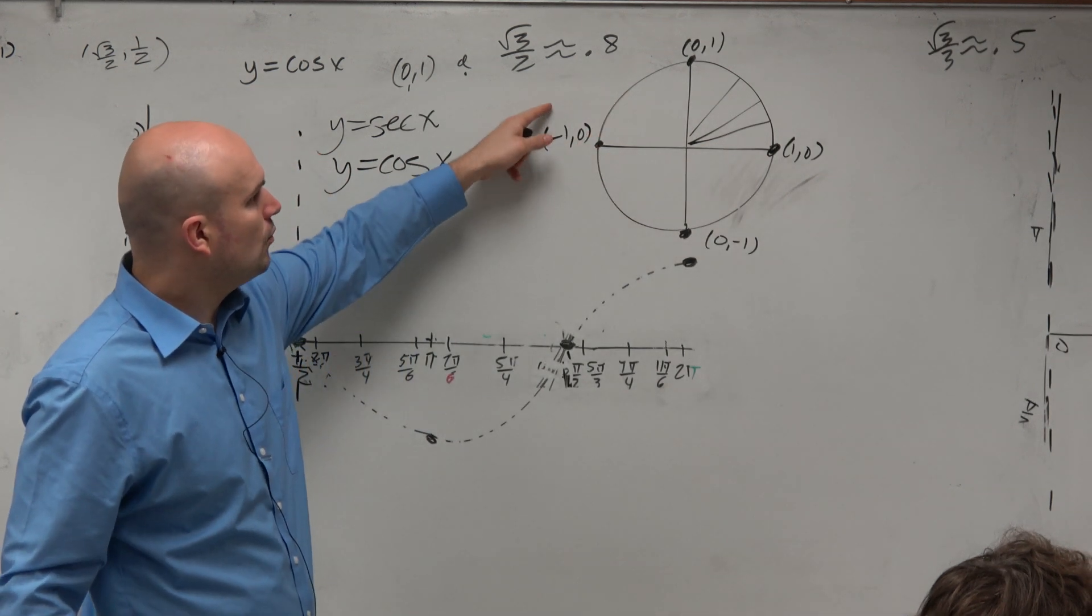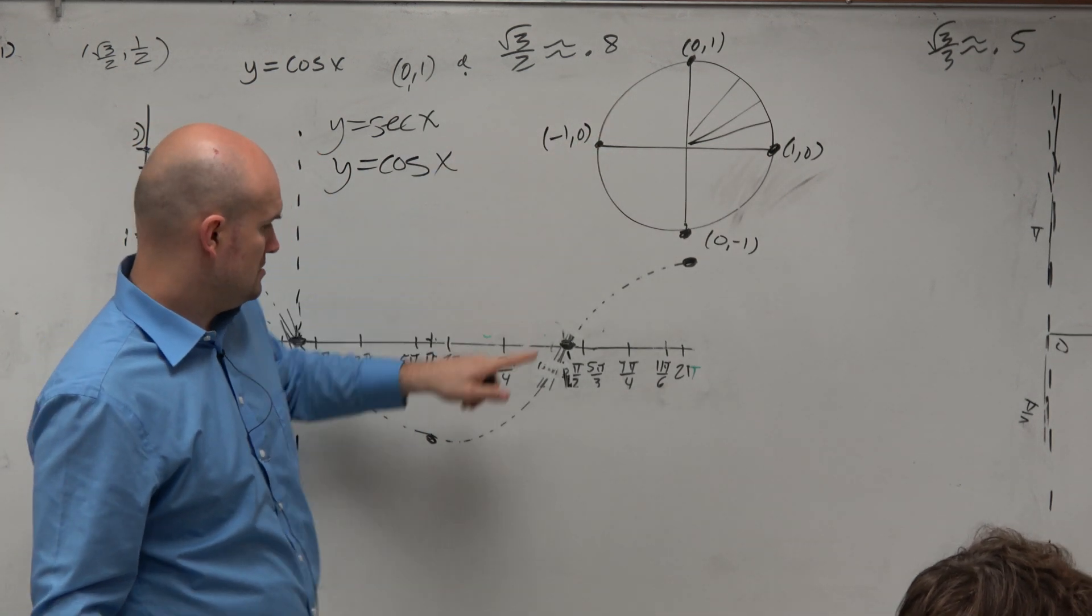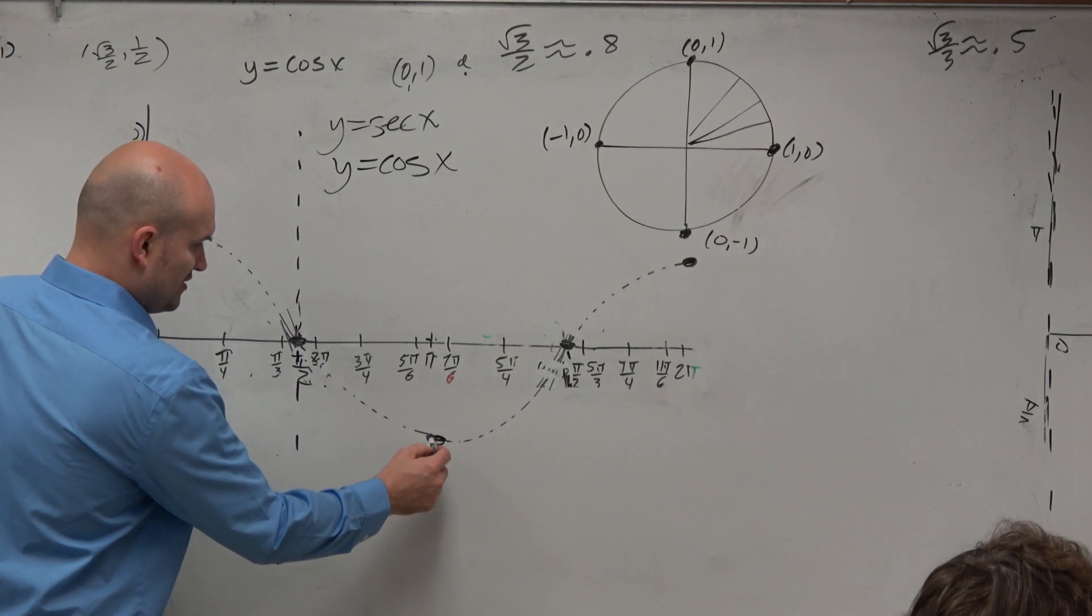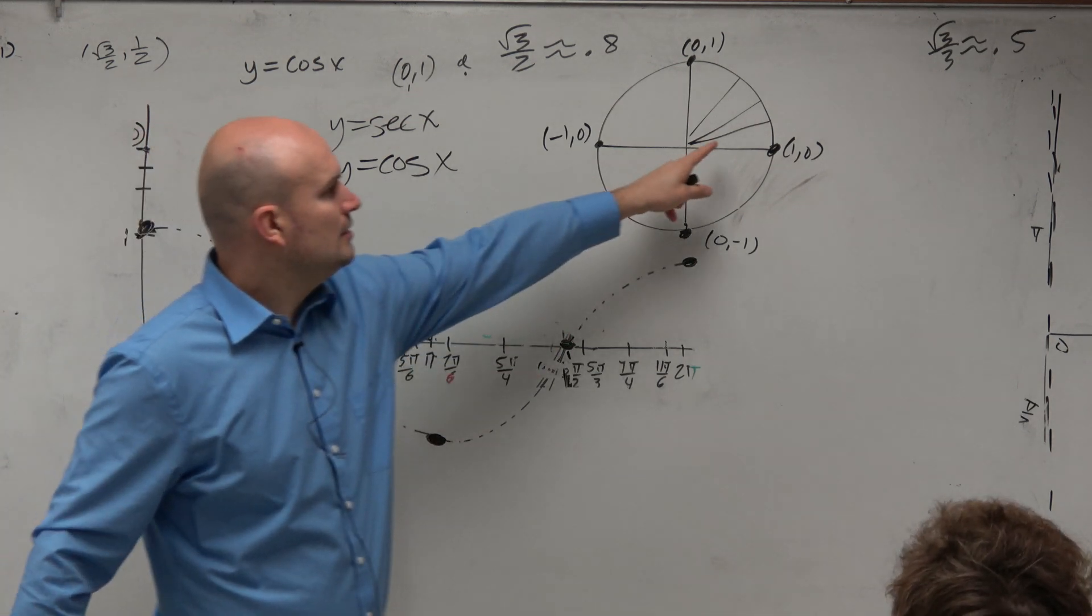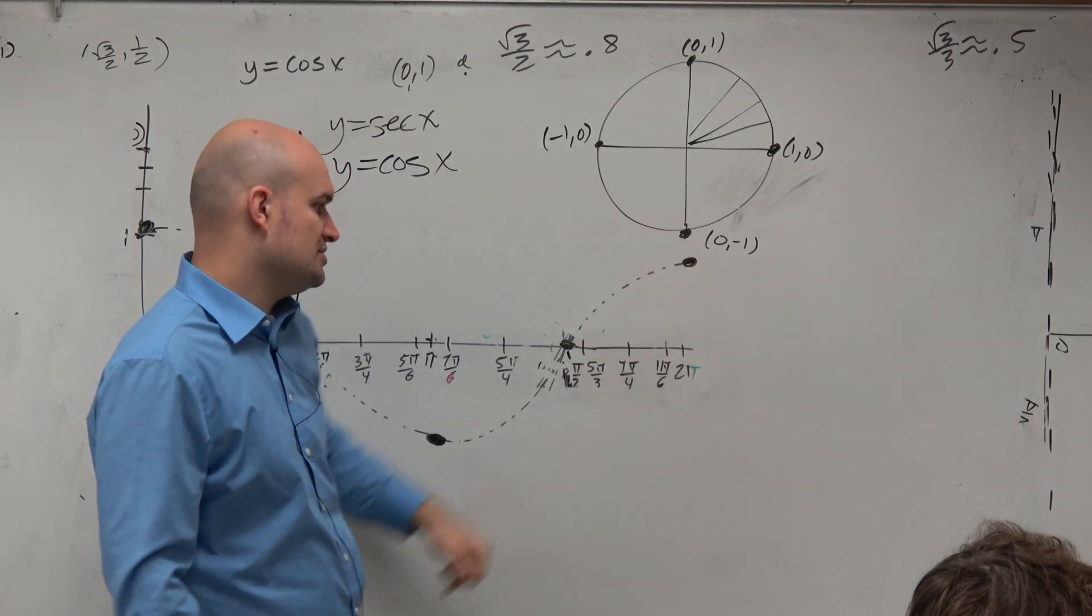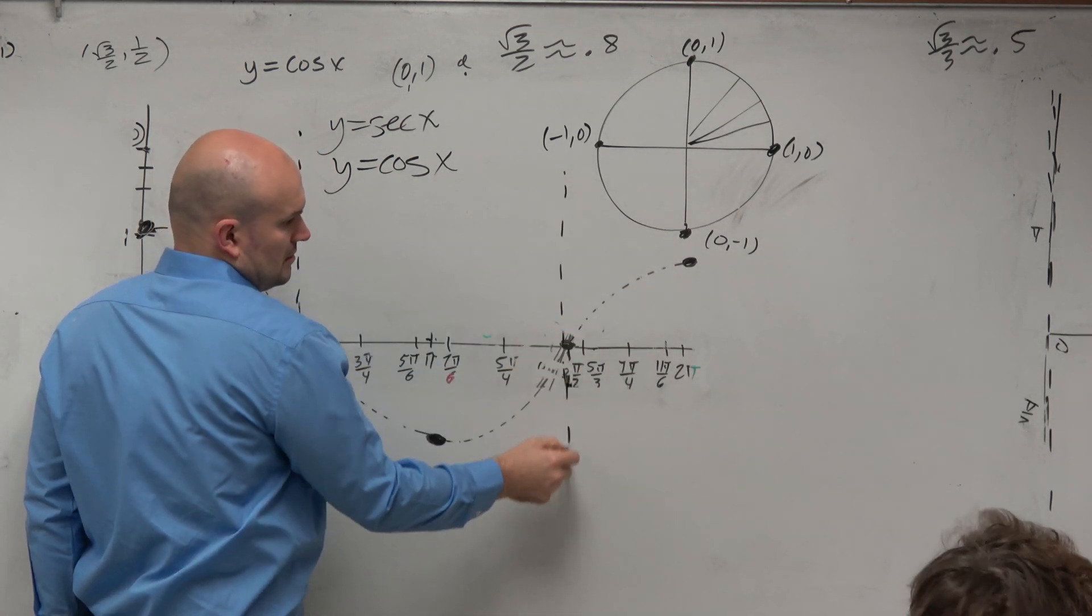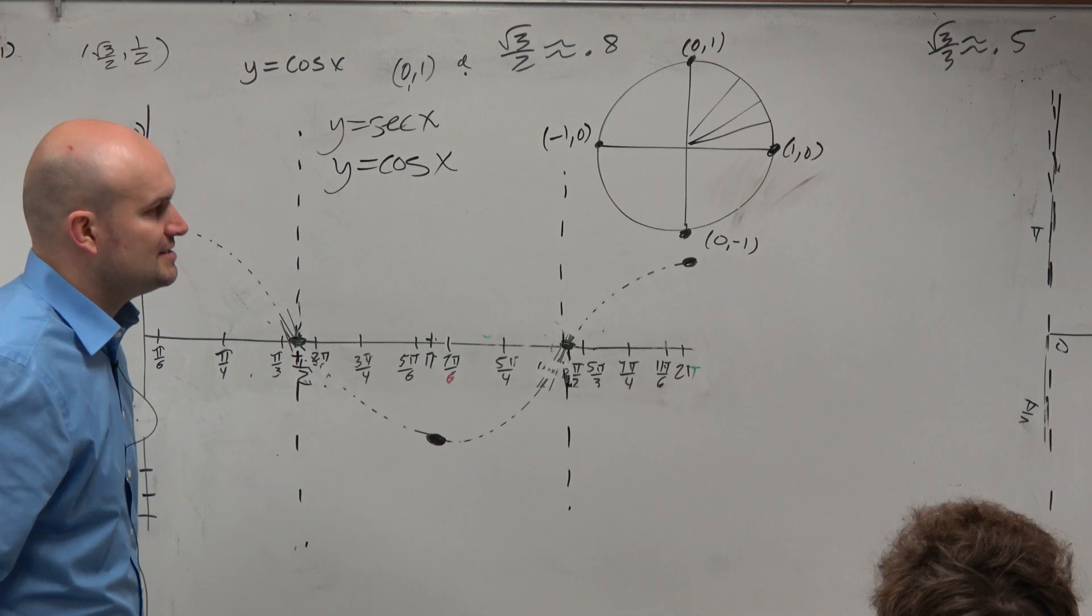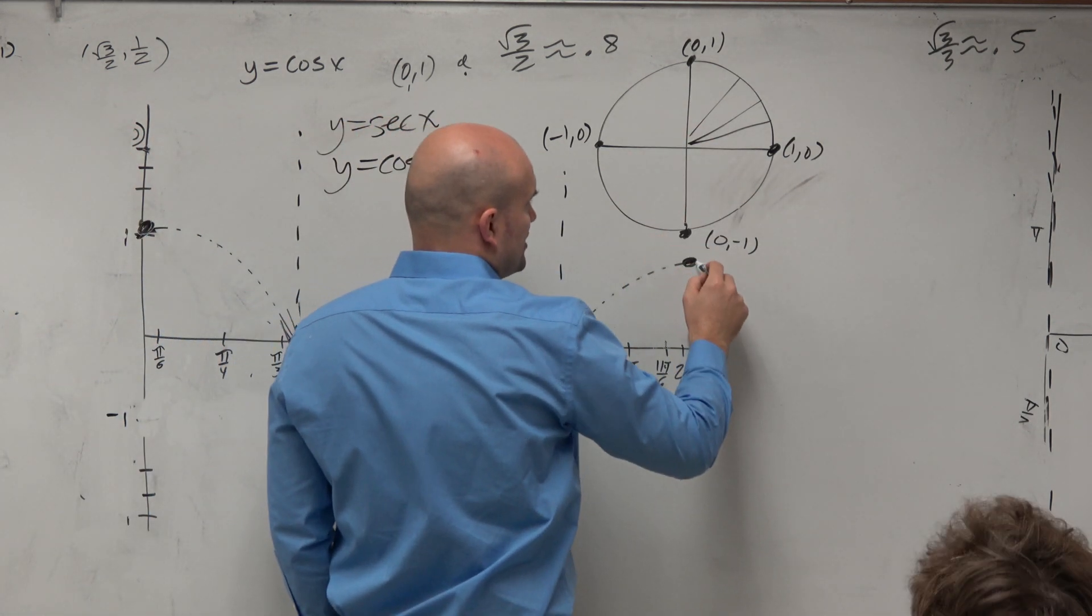And then we go to the angle pi. 1 over negative 1 is negative 1. So we have another shared value. At secant of 3 pi over 2 is 1 over 0, which is again undefined. And then we have at 2 pi, again, we're going to have another shared value.